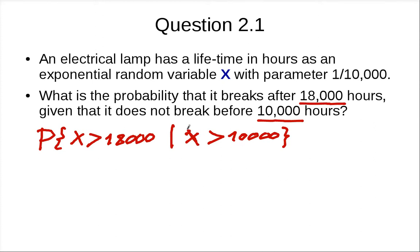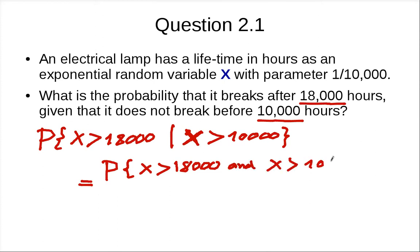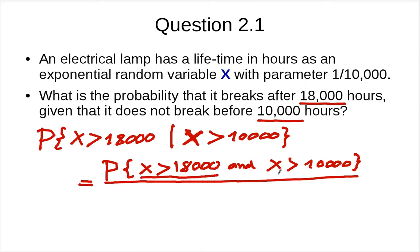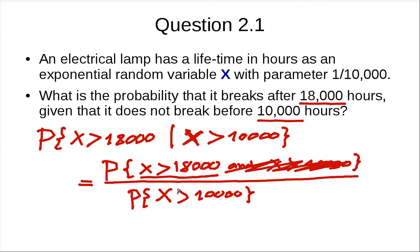Recall this is a conditional probability. The event x > 18,000 is a subset of x > 10,000, so the intersection is just x > 18,000. So the conditional probability simplifies to P(x > 18,000) divided by P(x > 10,000). Let's try to compute it.